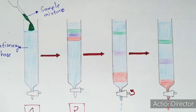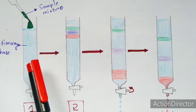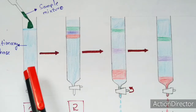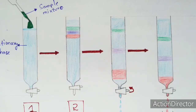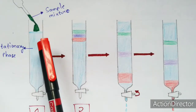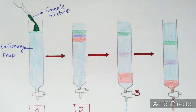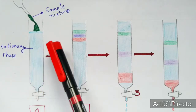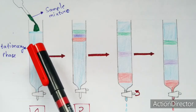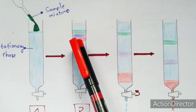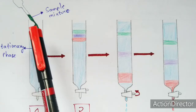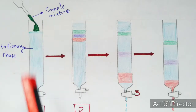Now let us see the procedure of column chromatography, which involves four steps. In the first step, the sample mixture is added to the column, which already contains the stationary phase with mobile phase. The mixture does not completely dissolve; instead it forms layers. The sample mixture is added at the surface of the stationary phase using a micro-injection or funnel.